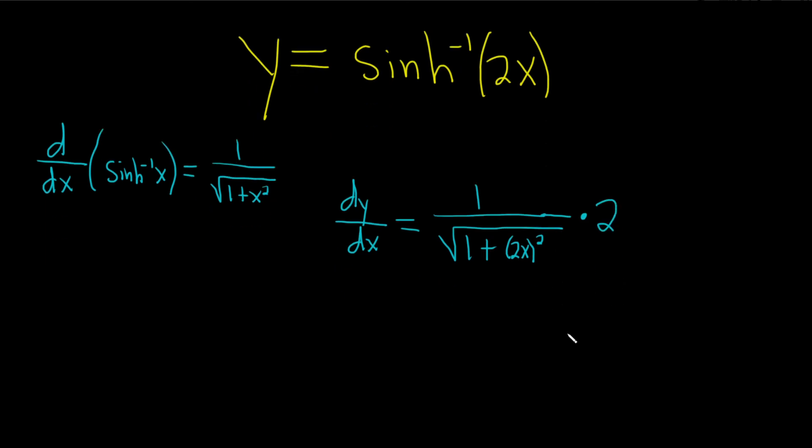The last thing to do is just clean this up on the bottom and put the 2 up top. So dy dx is equal to 2 over the square root of 1 plus, the square of 2 you get 4, square of the x you get x squared. And that would be the final answer.